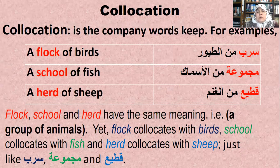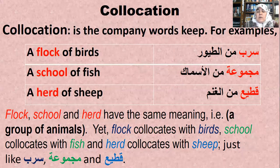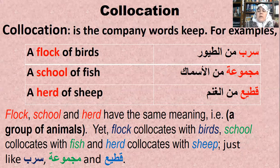So with al-toyour we use sirb, with al-asmaak we use majmu'a, and with al-ghnam we use qati'a. This characteristic applies not only to nouns — it also applies to verbs, prepositions, etc.